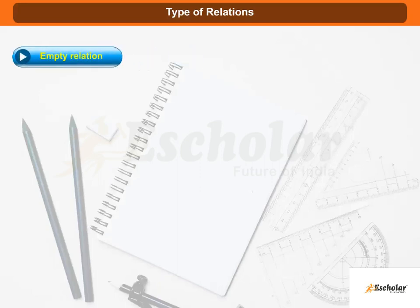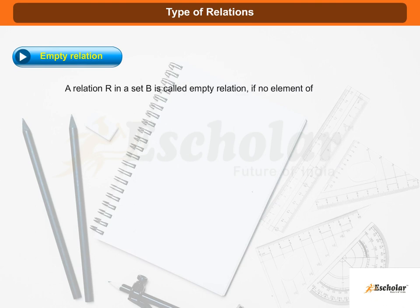Type of relations: Empty relation. A relation R in a set B is called empty relation if no element of B is related to any element of B, i.e., R is given as null set being a subset of Cartesian product of B and B.